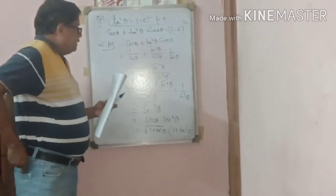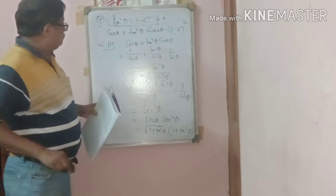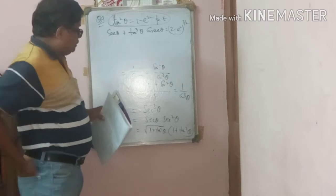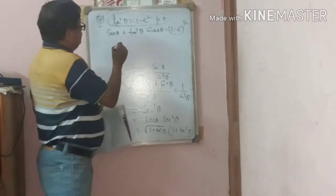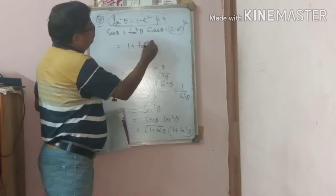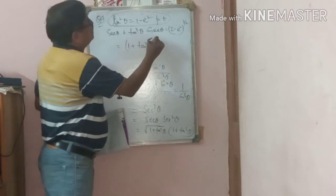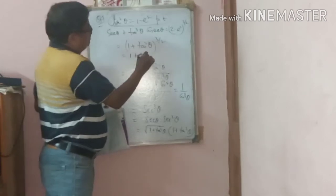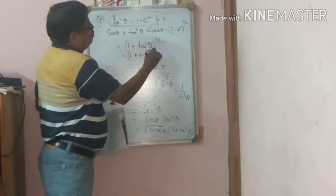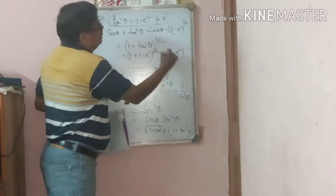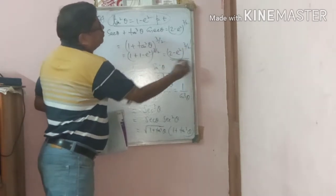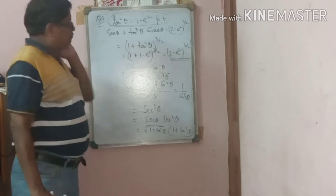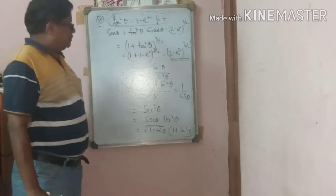So: sec³θ = (1 + tan²θ)^(3/2). Substituting tan²θ = 1 − a²: (1 + 1 − a²)^(3/2) = (2 − a²)^(3/2). This is the proof. LHS = RHS = (2 − a²)^(3/2).